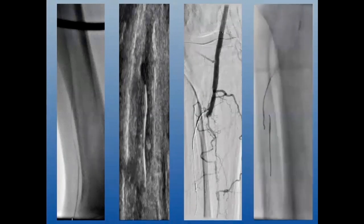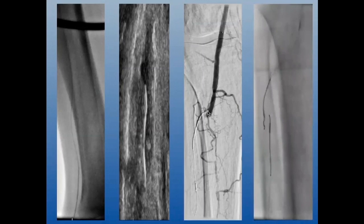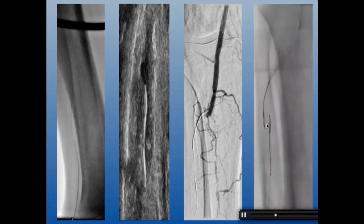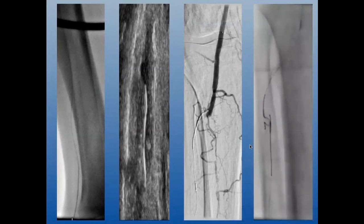But that was not the case at all. On angiogram I was at the side of the wall — clearly subadventitial, not an optimal position. Trying from both above and below, I was in two different subadventitial planes. I was using a low tip-load guidewire, which you can see prolapsing, so I needed to do something.